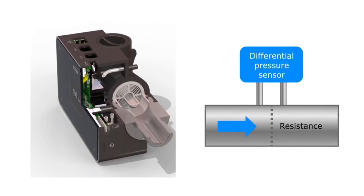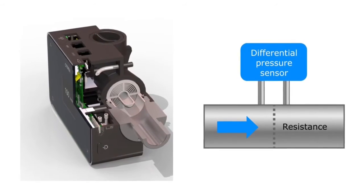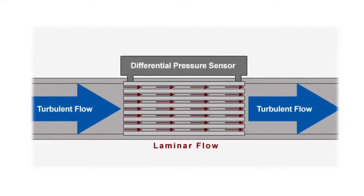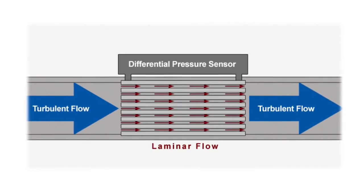A laminar flow element measures directly volumetric flow of gases. It operates on the principle that given laminar flow, the pressure difference across a pipe is linear to the flow rate.